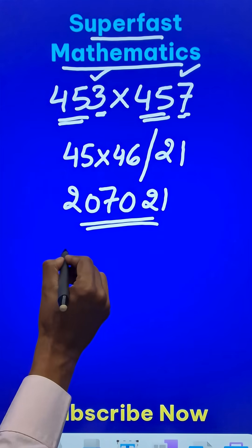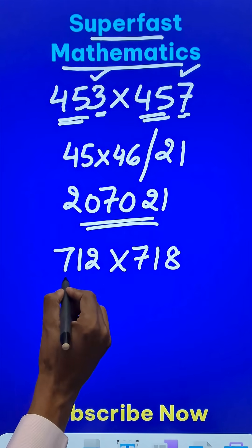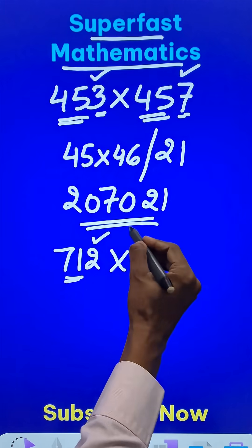Let's have one more example. 712 times 718. Now here we have 71, 71, and 2 plus 8 is 10.